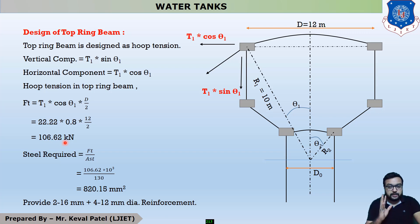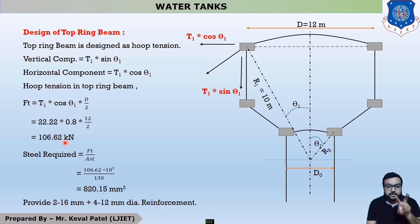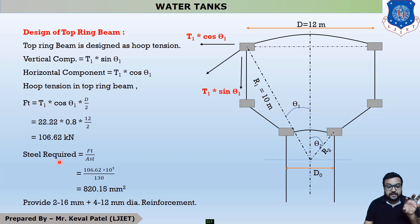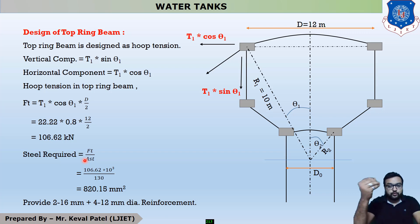There are two types of examples in structural engineering: analysis and design. In a design example, we find two values — steel and size. First, we find the steel area required. The formula is: Steel area = ft / sigma_ht, since stress = force / area. The equation contains a typing mistake; replace 'ht' with 'sigma_ht'.